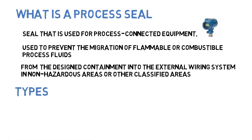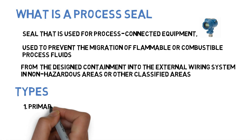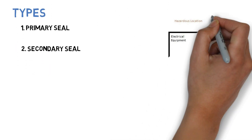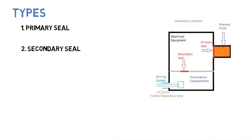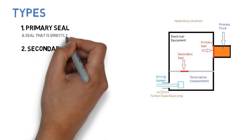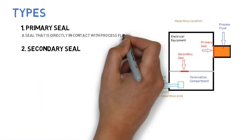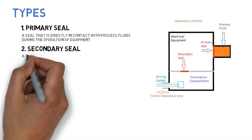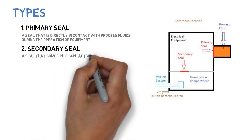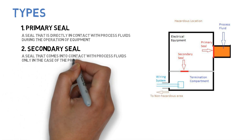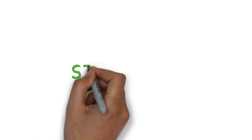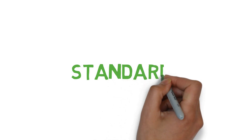There are two types of process seal: primary seal and secondary seal. A primary seal is a seal that is directly in contact with process fluids during the operation of equipment. A secondary seal comes into contact with process fluids only in the case of primary seal failure.